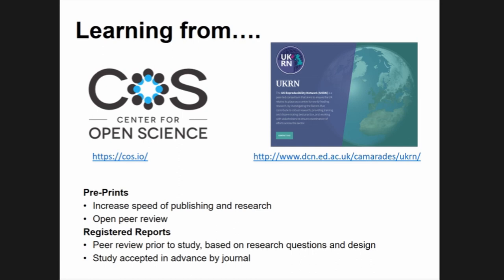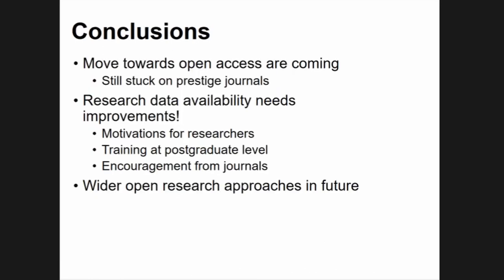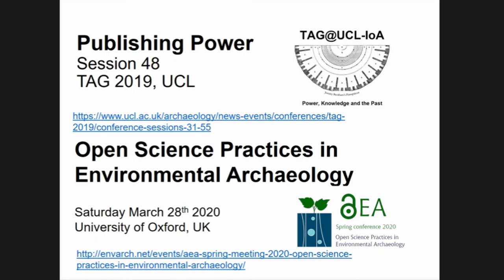In conclusion: there are big moves towards open access which are great, but they involve lots of power inequalities and challenges we need to think through as a discipline. We're still stuck on prestige journals, despite most institutions being signatories to DORA. We need to teach postgraduates and undergraduates about research data — that CSV files are great and PDFs are bad. There are a lot of exciting open research approaches coming through which will have big impacts, and there's a really exciting conference taking place in Oxford in March.